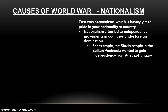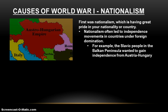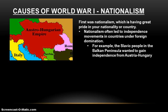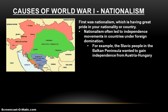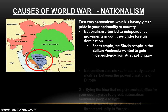Let's start with nationalism. Nationalism, by definition, is kind of like having great pride in your nationality or your country — it's like patriotism, as we would think of it. Nationalism often led to independence movements in countries under foreign domination. For example, the Austro-Hungarian Empire encompassed many different nationalities, and the Slavic people who lived in the Balkan Peninsula, in the southern part of the Austro-Hungarian Empire, wanted independence from Austria-Hungary. They wanted to join with their neighbors, Serbia, who were also Slavic. And so those feelings of Slavic nationalism in Austria are one of the destabilizing forces facing Europe during this time.